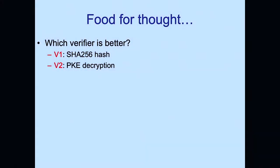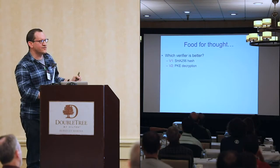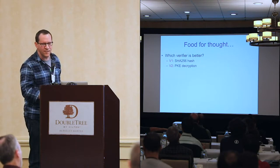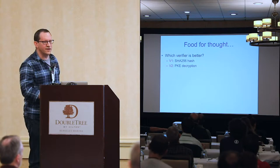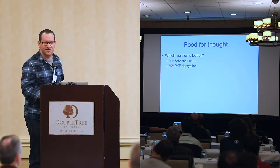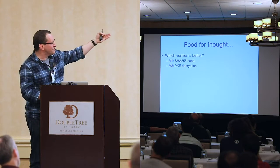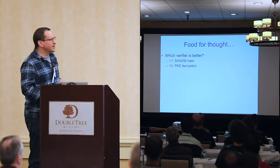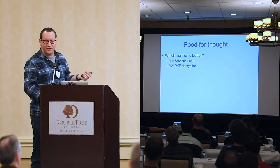Consider an extreme example: two identical SNARKs with the same prover complexity and proof size, differing only in verification cost. In the first, the verifier performs a single application of SHA-256; in the second, the verifier performs decryption of a standard public encryption scheme. Normally we'd say the second verifier is much worse — by orders of magnitude.